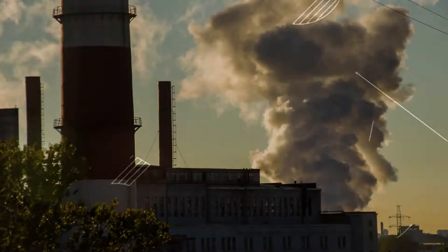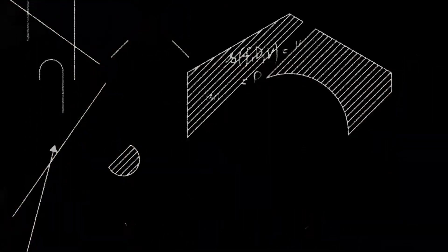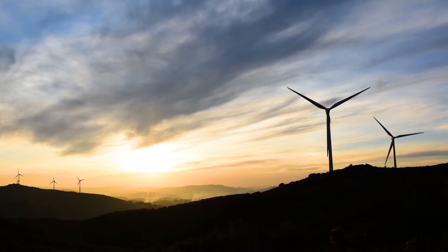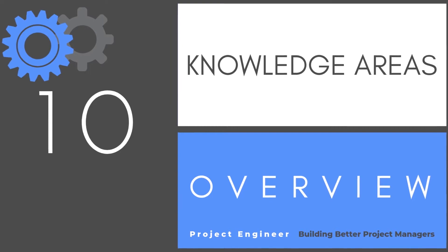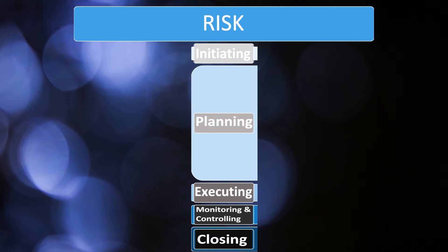Welcome to Project Engineer where every day we're building better project managers. This is our 10 part video series covering the 10 knowledge areas you need to know for project management. In this video we're going to talk about the knowledge area called risk. Risk has seven processes so it's heavy just like integration, but the difference here is that it's planning heavy — there are a lot of processes that happen in planning. Let's get started.